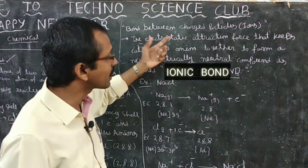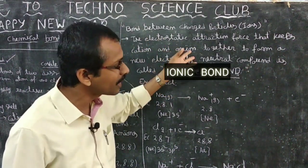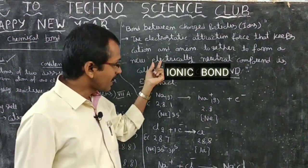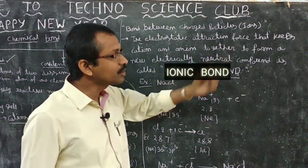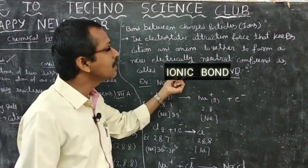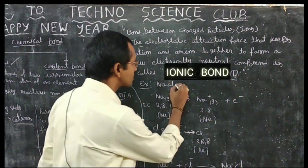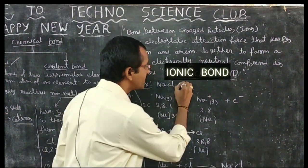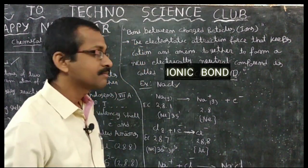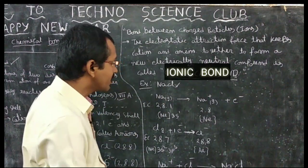Because of this electrostatic attraction force between the anion and cation, they form electrically neutral compounds. That bonding is called an ionic bond. For example, NaCl — sodium chloride — normal salt — is the example of an ionic bond.